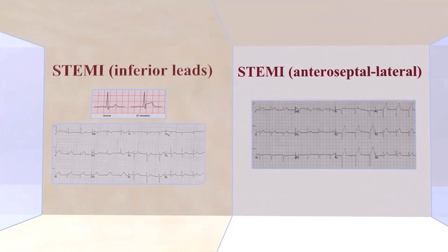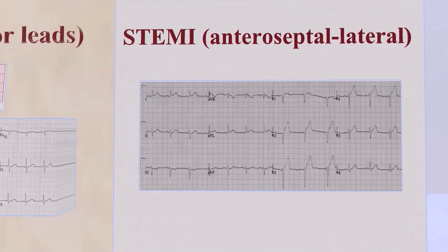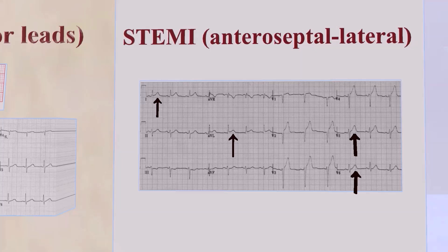In contrast, here we see an anteroseptal lateral STEMI. Anteroseptal means changes in V1, V2, V3, V4; lateral means leads 1, AVL, V5, V6. Looking at the ECG, we see ST segment elevation in V1 through V6 — so we're talking about an anteroseptal myocardial infarction that also includes the lateral leads, making this an anteroseptal lateral ST segment elevation myocardial infarction.